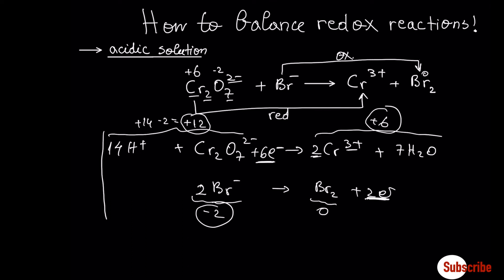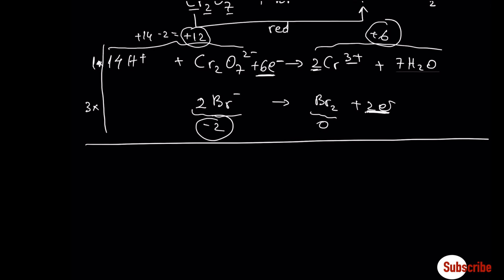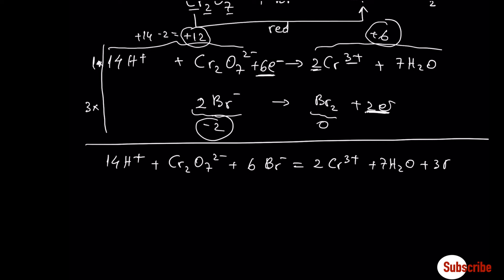Now we have to balance the electrons in both half reactions by finding the smallest whole number that divides both — in this case it's 6, so we multiply the first half reaction by 1 and the second by 3. Let's rewrite both equations together. The final equation: 3 multiplied by 2 is 6, and 1 multiplied by 6 is 6, so the electrons cancel out. Now let's move to basic solutions.